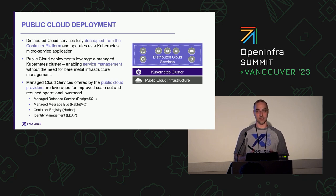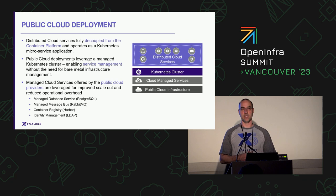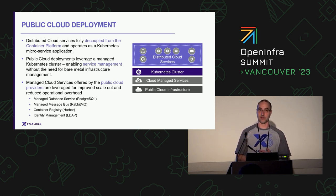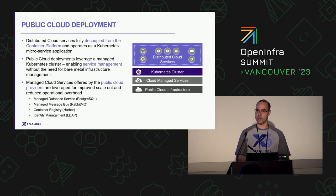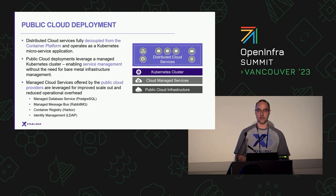Because we have the public cloud, we can also take advantage of managed services — not just the public cloud infrastructure for Kubernetes, but other components offered by the public cloud. These can include managed database services, message bus services like RabbitMQ. Many public clouds offer these at scale as managed services, allowing you to focus on your application space rather than the underlying infrastructure. Whenever available, we want to take advantage of those managed services for increased scale and capacity.